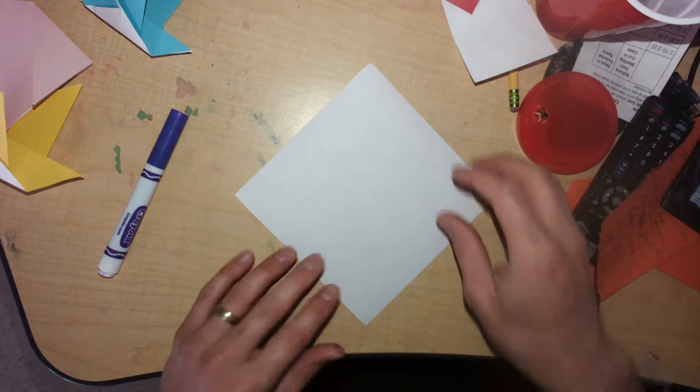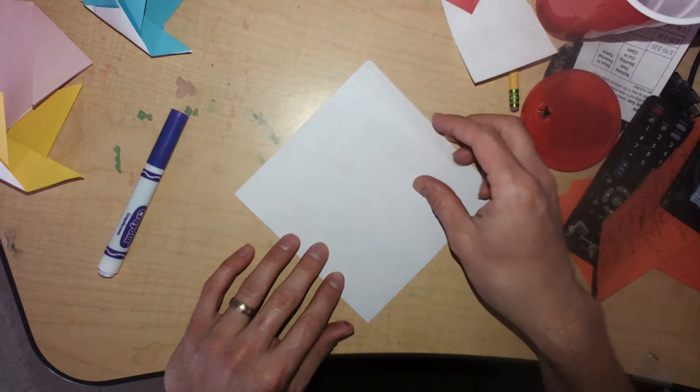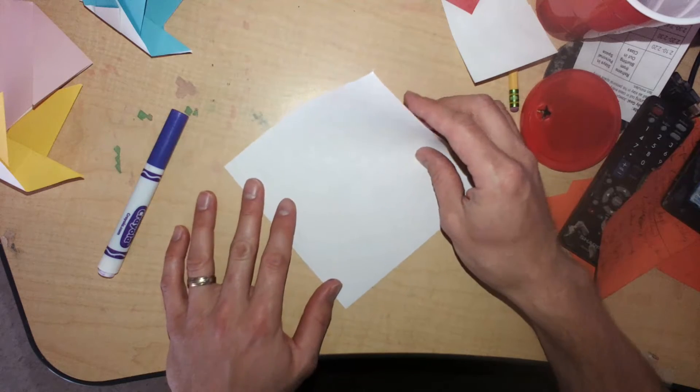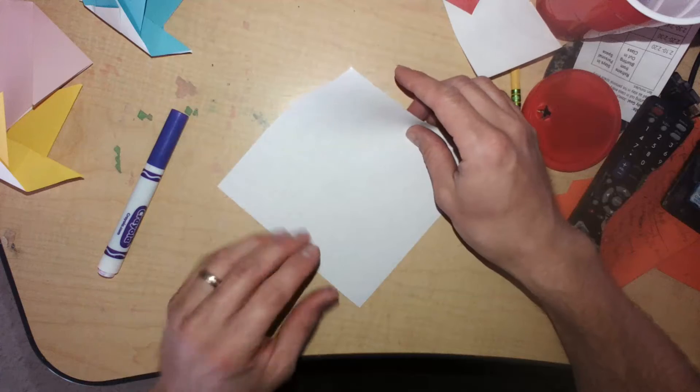In this video we're going to learn how to make an origami lion. I've also had kids tell me that it looks more like a cobra snake, so you could have it be either.